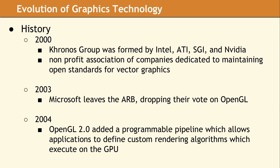A few years later, Microsoft abandoned its position on the OpenGL ARB committee and devoted all its 3D graphics efforts towards its own Direct3D standard. The following year, OpenGL 2.0 came out, which was a major overhaul of the API. This new version added support for a programmable rendering pipeline, which gave developers the ability to design their own rendering algorithms. This was a highly requested feature, but unfortunately the code had to be in assembly and was very hard to develop.